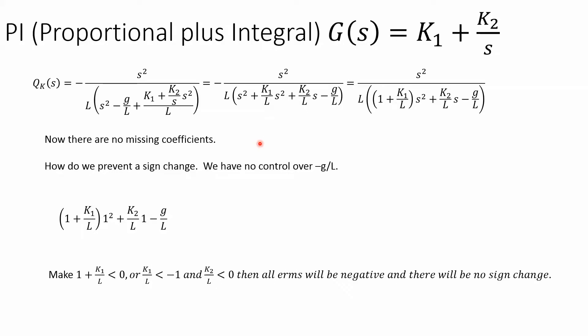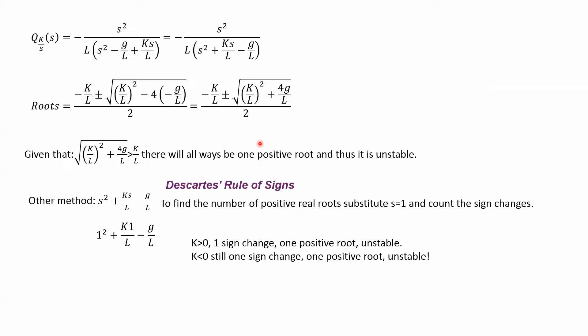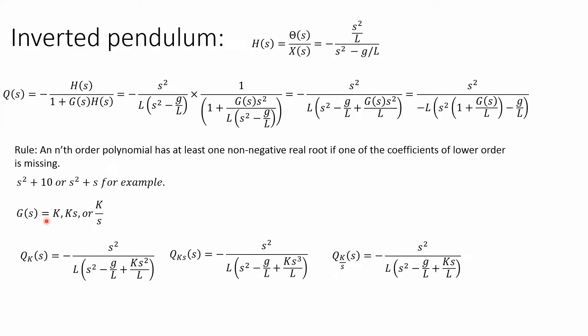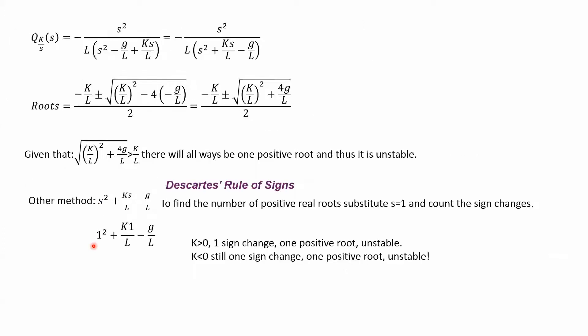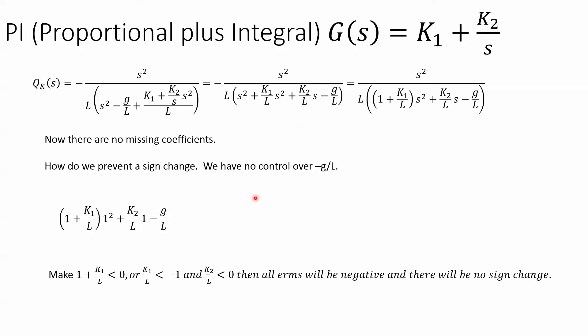Let's investigate proportional plus integral. Why won't I investigate proportional plus s? Because there'll still be a missing term. So I'm going to put this into the equation for G(s). Looking at the algebra, I still keep an s² term.